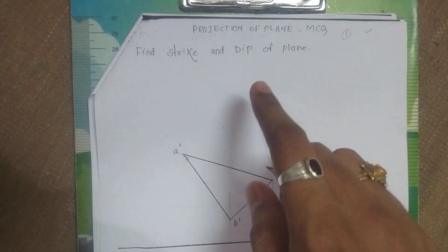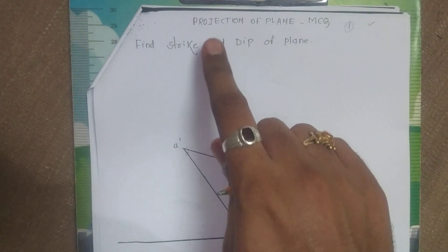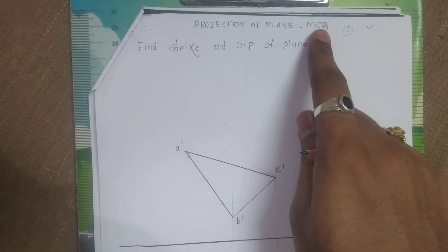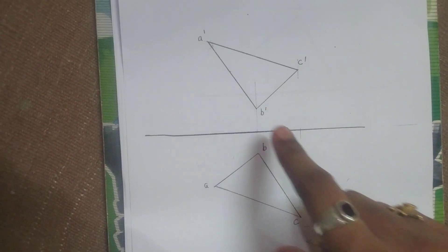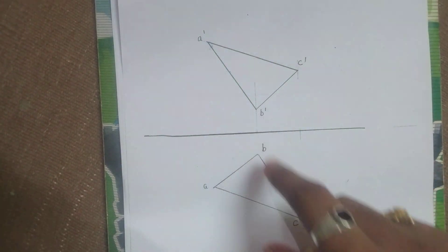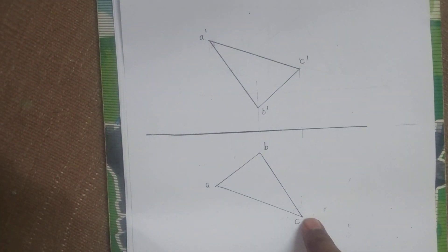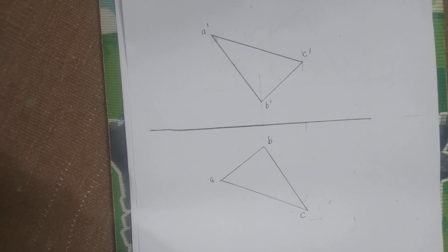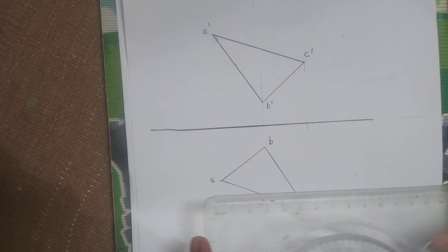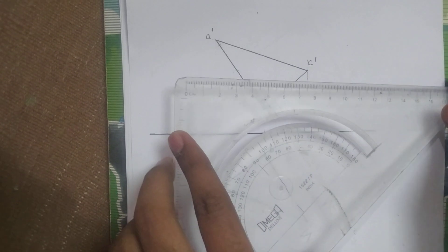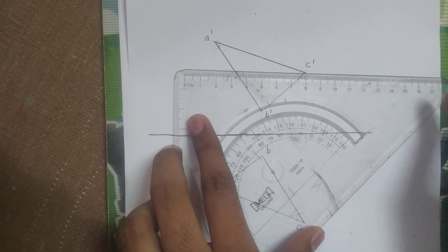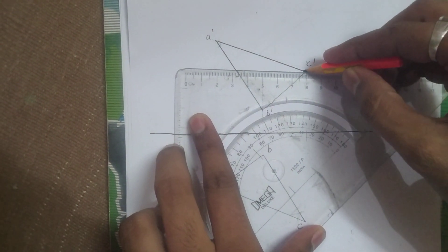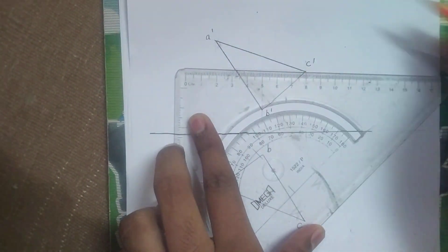Hello dear student. Today we are going to see the projection of plane MCQs — in it we have to find the strike and dip of the plane. The strike is nothing but the longest horizontal line in a front view and its bearing. Dip is the angle made by the plane with HP. First of all, you have to mark the longest horizontal line in a front view, which is generally parallel to the XY line.